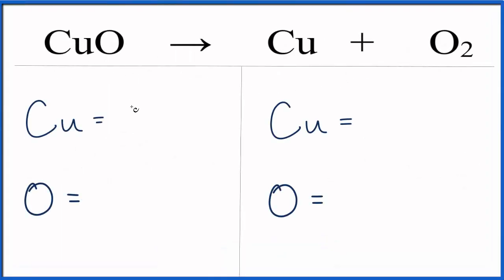On the reactant side, we have 1 copper and 1 oxygen. On the products, we have 1 copper and 2 oxygen. So it's not balanced.